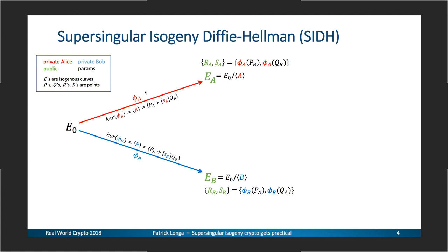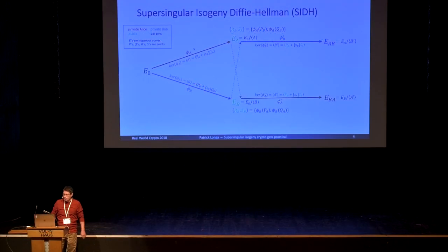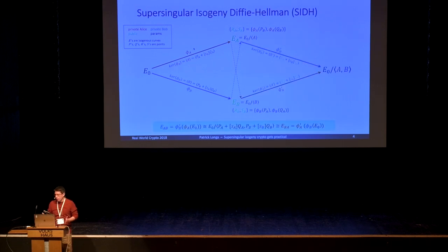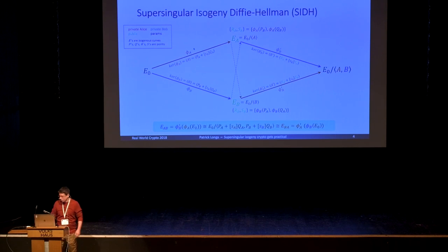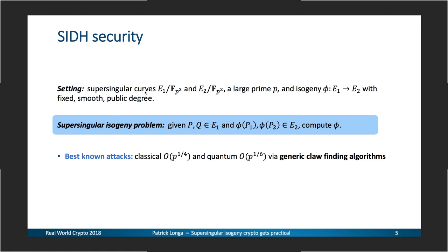We actually need a couple of evaluations on public points using these secret isogenies. With this information, Alice can continue the computation taking curve EB and using a new subgroup set up with secret SA, arriving at a new isogeny that maps EB to a new curve EBA, which is EB modulo the new subgroup A'. Bob does a similar computation. What is interesting is that these two new curves are isomorphic — they correspond to E₀ modulo the original subgroups A and B together. We can then use the J-invariant of these curves as the shared secret.